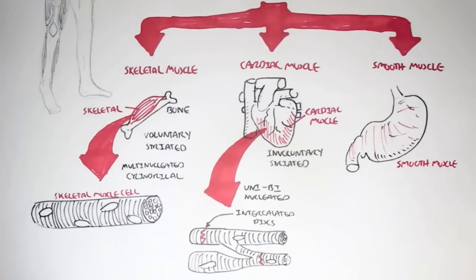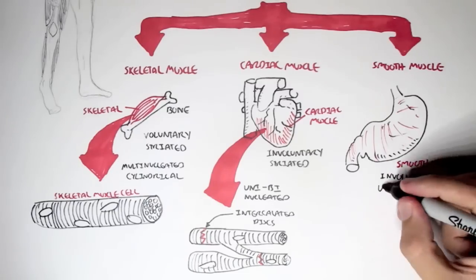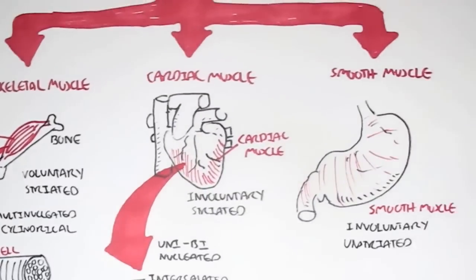This movement of food down the gastrointestinal tract is known as peristalsis and is assisted by the smooth muscle cells. As expected, smooth muscle cells are involuntary in that we have no conscious control over them.